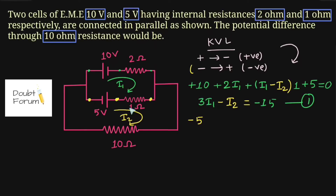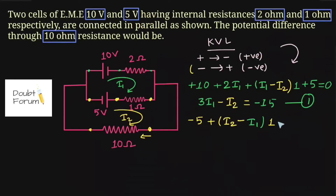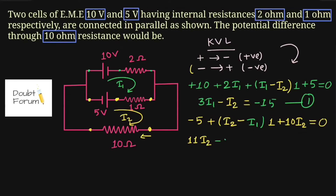So the net current flowing through this 1 ohm resistor is i2 minus i1. We multiply by its resistance value to get the voltage drop. Moving from this point to the next, i2 current enters and leaves, so the voltage drop across the 10 ohm resistor is 10 times i2. Completing the second loop and applying KVL: 10i2 plus i2 gives 11i2 minus i1 equals 5. This is our Equation 2.